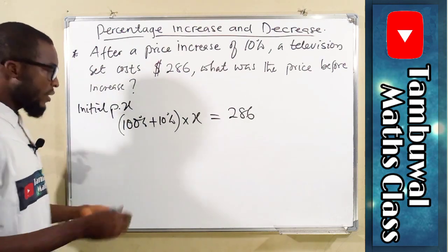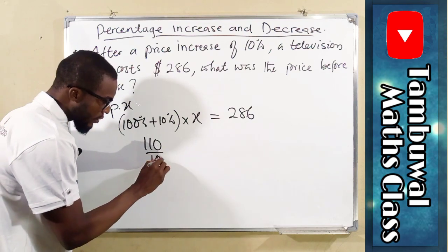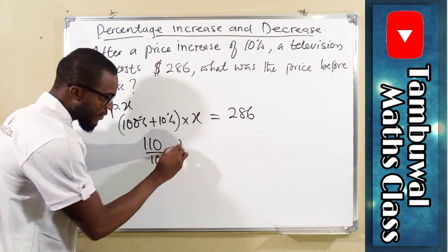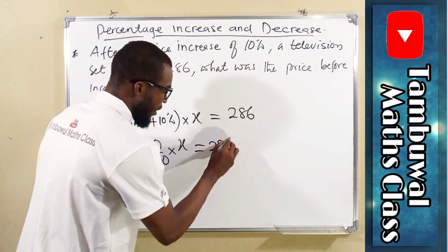100 plus 10 is 110, out of 100 times X. This is equal to 286.